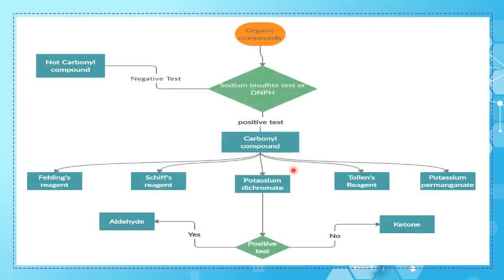This is a concept map summarizing all the tests. For an organic compound, we first perform a sodium bisulfite or DNPH test. If negative, it is not a carbonyl compound. If positive, it is a carbonyl compound — either an aldehyde or a ketone. To distinguish between them, we perform one of the following: Fehling's, Schiff's, Tollen's, potassium dichromate, or potassium permanganate. A positive result indicates an aldehyde; a negative result indicates a ketone.